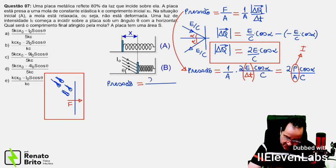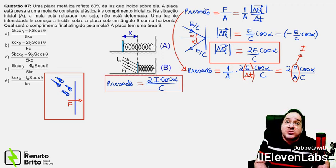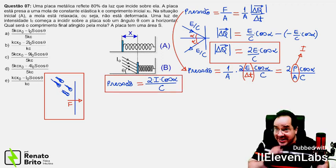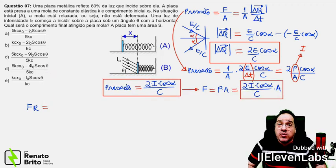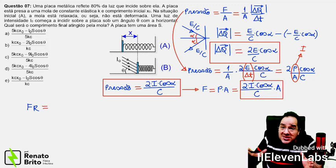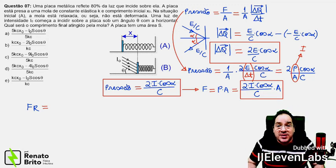And therefore, the radiation pressure as a function of the incident radiation intensity will be given by this expression. And remembering that the pressure force is the pressure times the area, let's find this force. Well, from now on, let's calculate the force that this radiation applies when it strikes this plate.